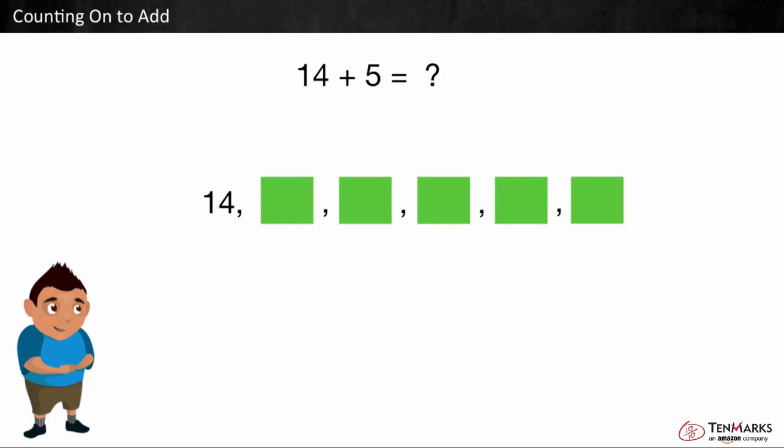then count on 15, 16, 17, 18, 19. We counted on 5 numbers. This means that 14 plus 5 is equal to 19.